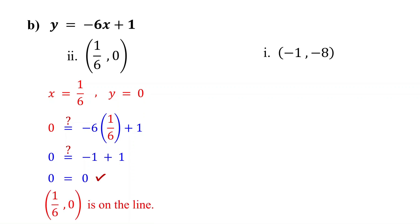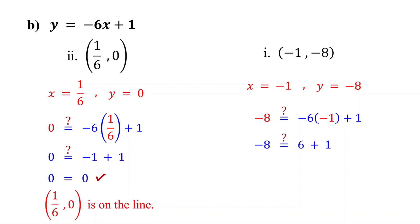For the point negative 1 comma negative 8, negative 1 is the x value and negative 8 is the y value. So substitute negative 1 for x and negative 8 for y. Then simplify. Negative 6 times negative 1 is 6. 6 plus 1 is 7. Since negative 8 is not equal to 7, the point negative 1 comma negative 8 is not a solution to the equation, so it is not on the line.